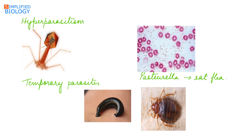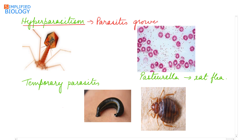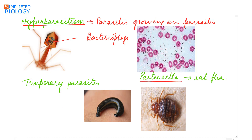The next type is hyperparasitism — these are parasites that grow on other parasites. Examples include bacteriophages, which grow on bacteria, and Pasteurella, which grows on rat fleas.